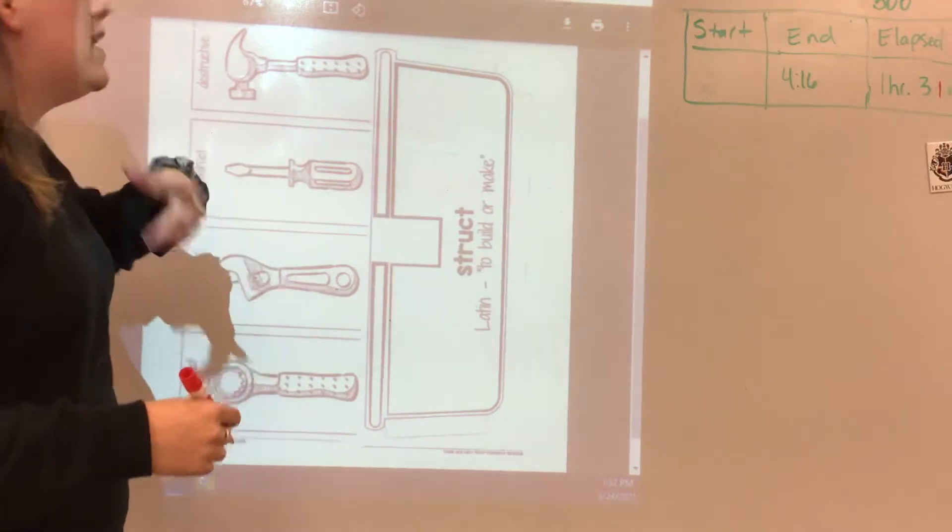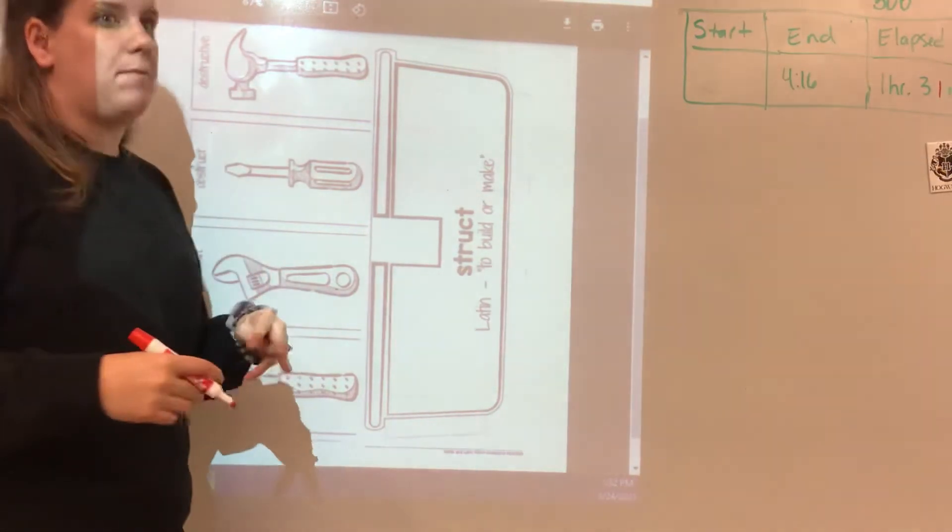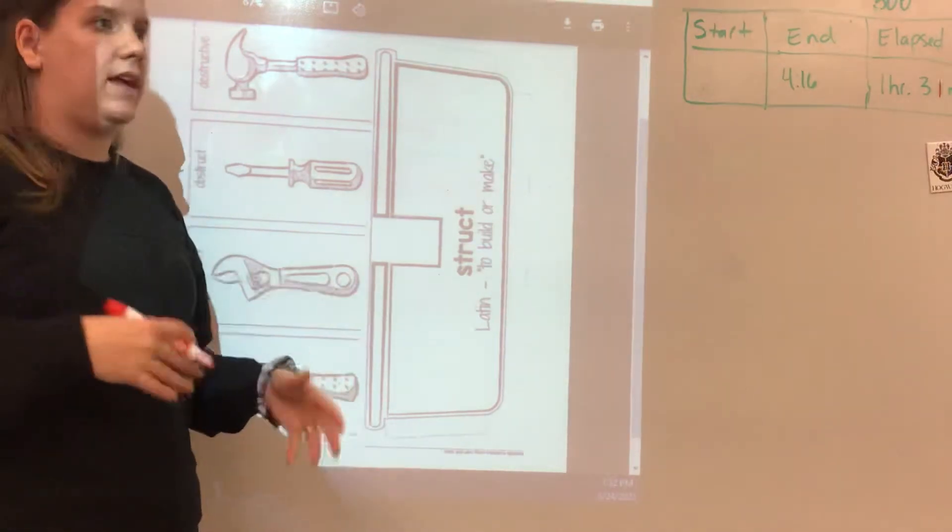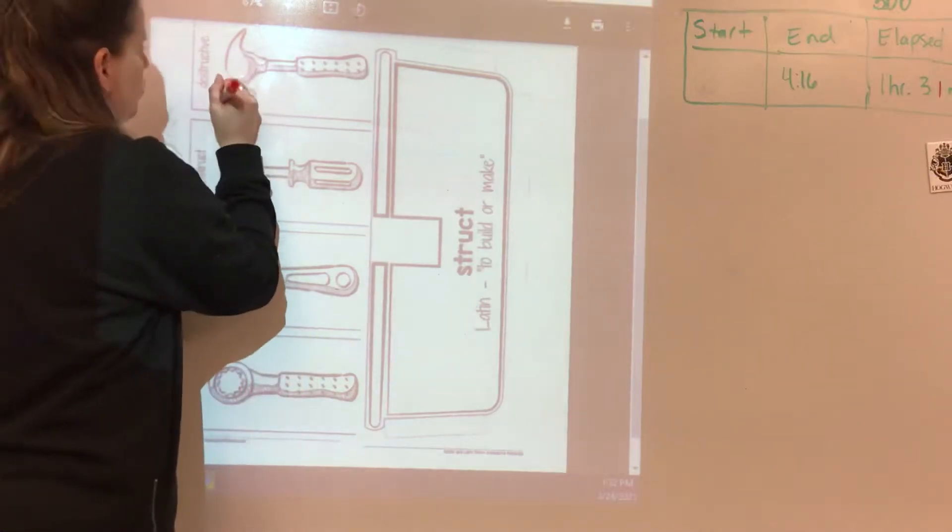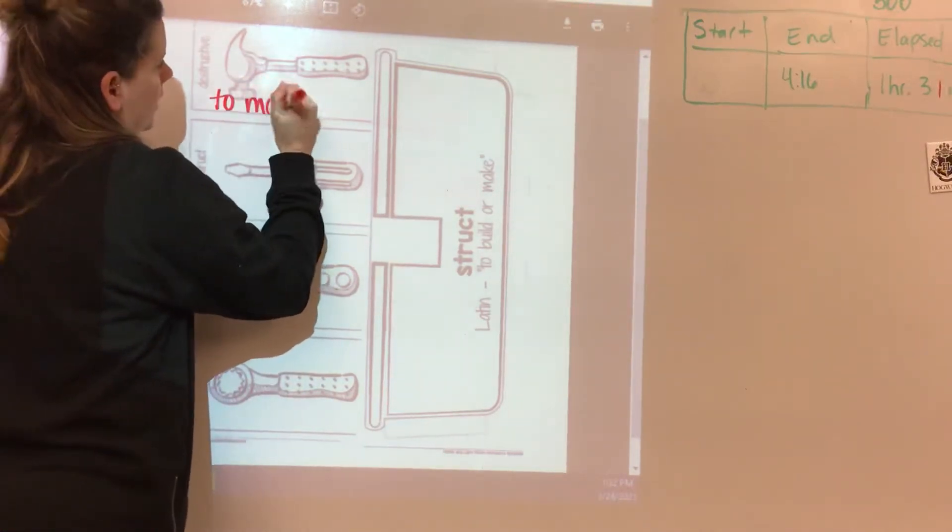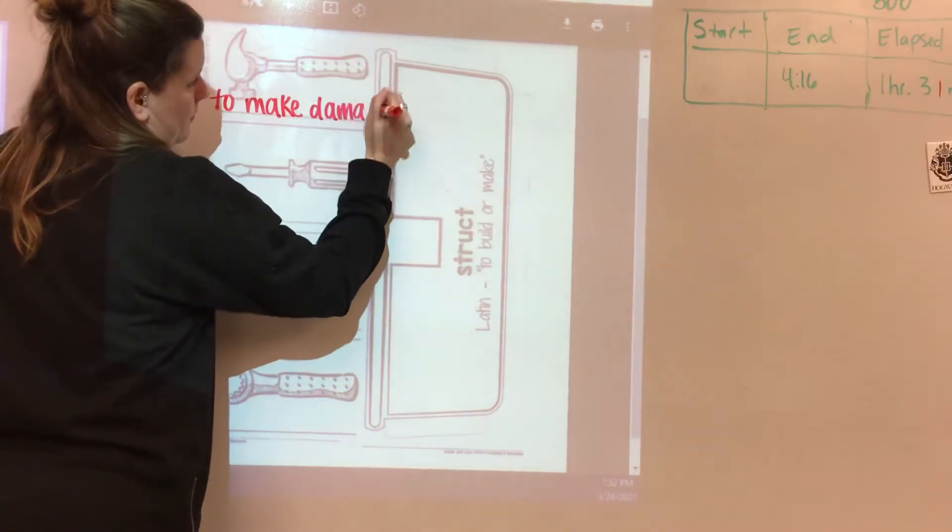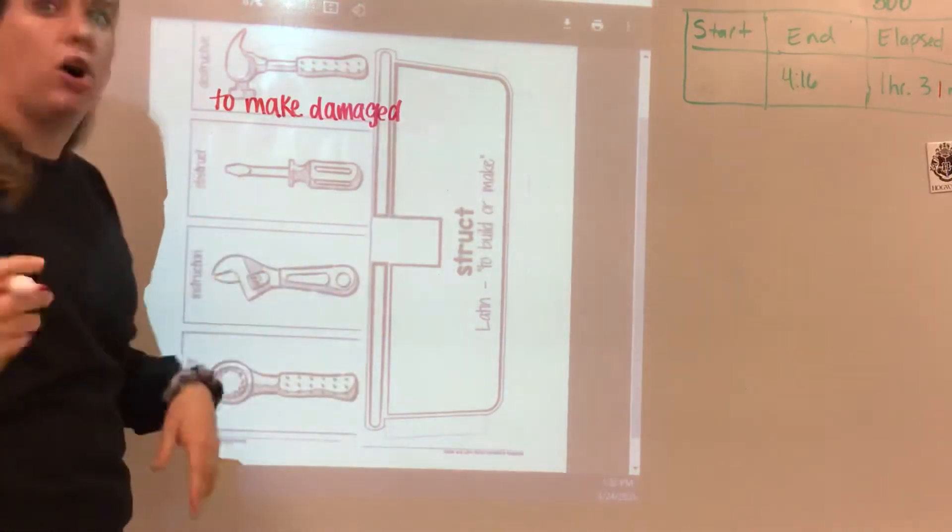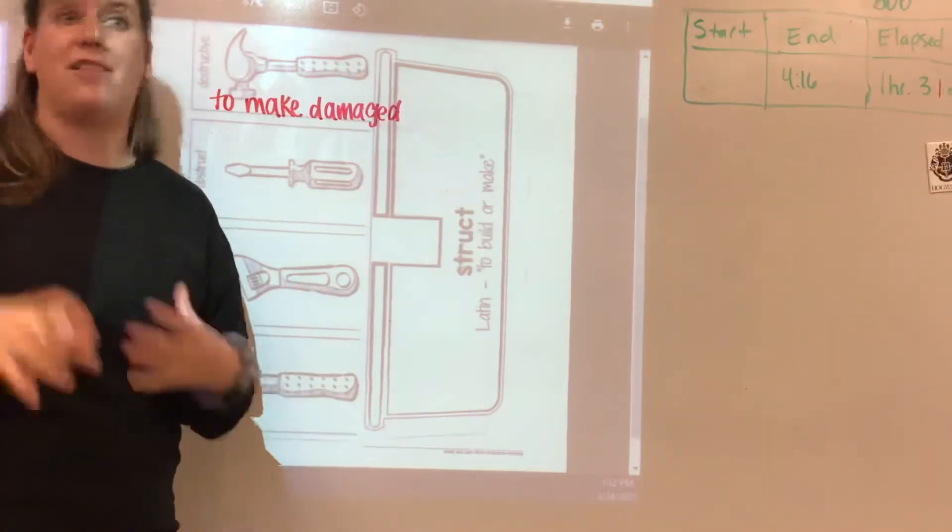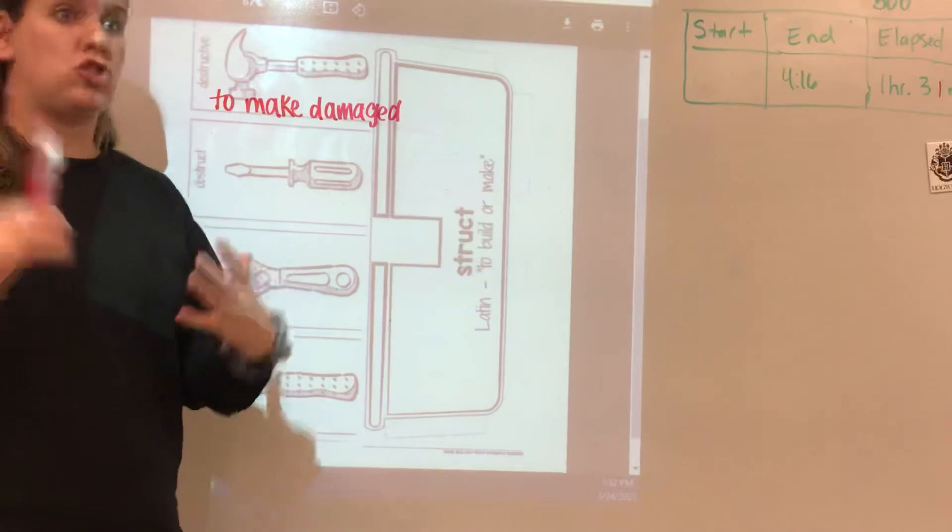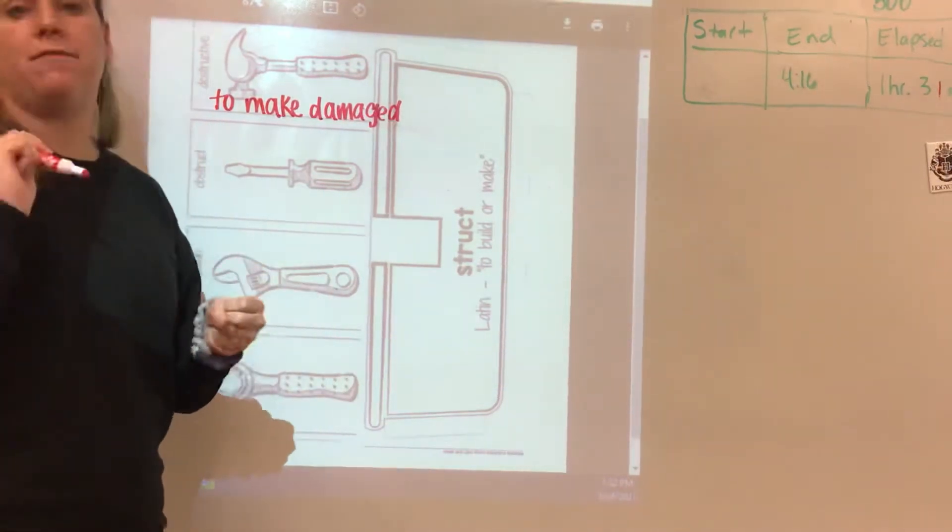The first one we're going to look at is destructive and we know de is, that means like to not do something or something of that sort. So destructive would mean to make damaged. So that means it's going to cause harm or damage. So if something's destructive, they're tearing it down. The construction team was destructive when it came to remodeling the house.